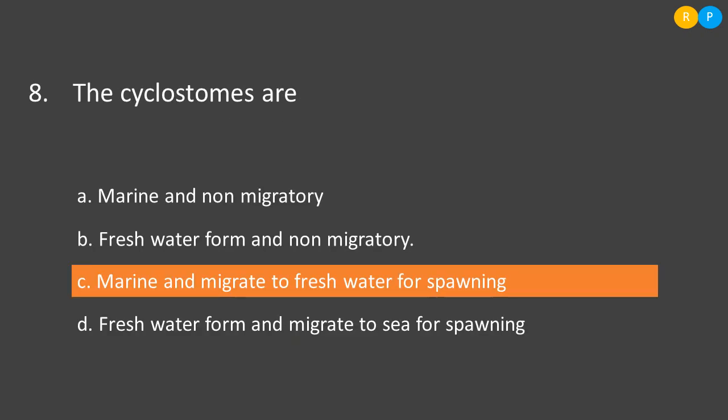The next question: the cyclostomes are? Cyclostomes are actually jawless fishes that exhibit unique characteristic behavior. They inhabit marine water, but during spawning they migrate to fresh water where they lay eggs, after which the adults die. New larvae emerge from the eggs, undergo metamorphosis in fresh water, and then migrate back to the ocean. This is the unique life cycle feature seen in cyclostomes.